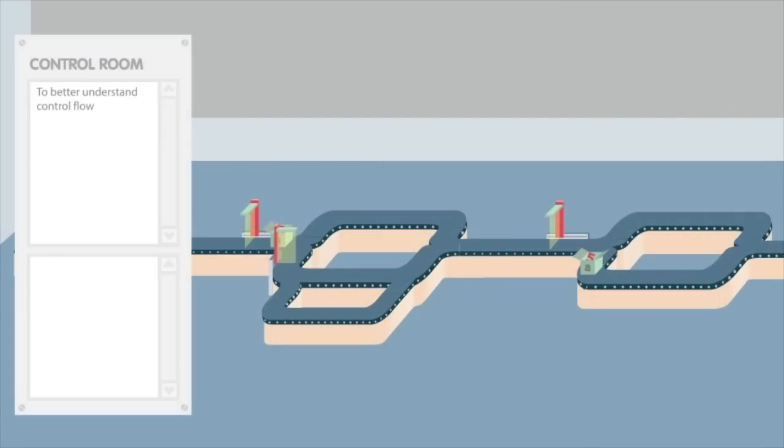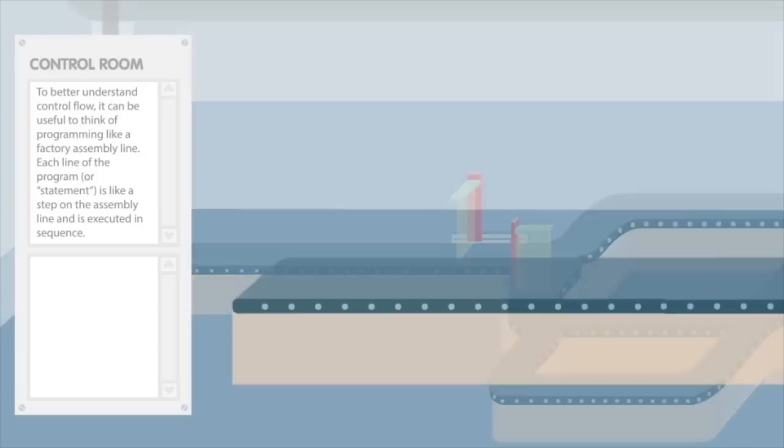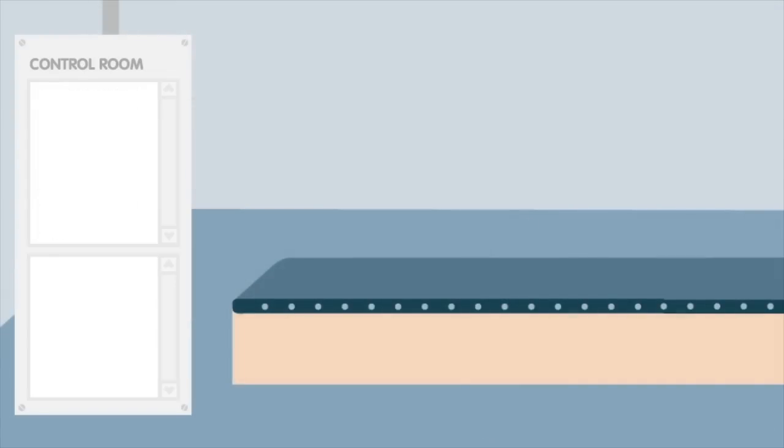To better understand control flow, it can be useful to think of programming like a factory assembly line. Each line of the program, or statement, is like a step on the assembly line and is executed in sequence. Here, a single variable A is declared and then assigned the value of 5.